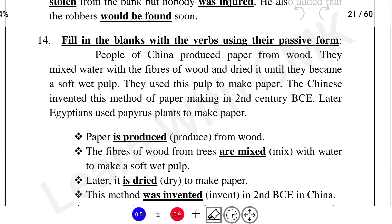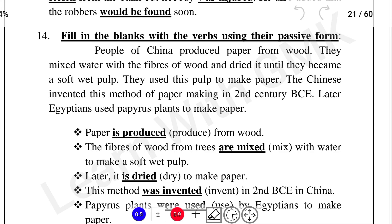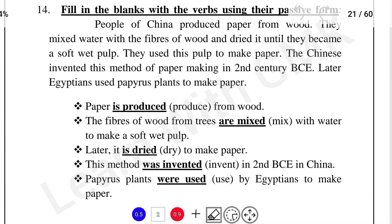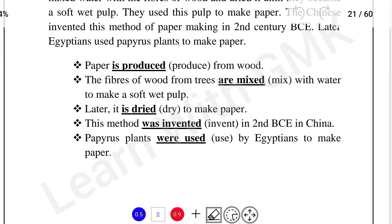Fill in the blanks with the verbs using their passive form. Paper is produced from wood. The fibers of wood from trees are mixed with water to make a soft wet pulp. Later, it is dried to make paper. This method was invented in 2nd BCE in China. Papyrus plants were used by Egyptians to make paper.